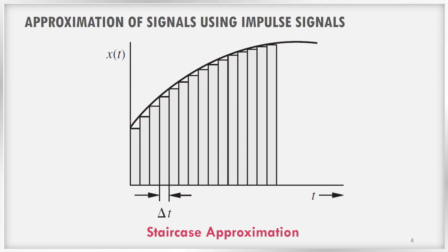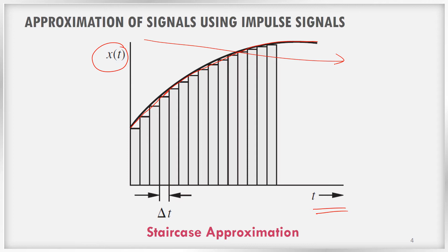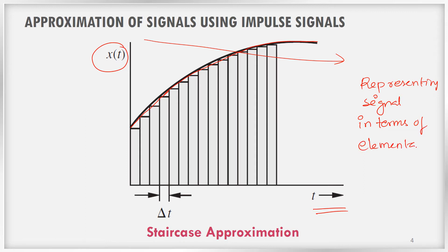Here we can see a signal x(t), marked in red color. This is the time axis. The signal x(t) is complex to analyze because it lasts for a long time. We can make our analysis easier by dividing this problem into small elements — that is, representing our signal in terms of elementary signals.